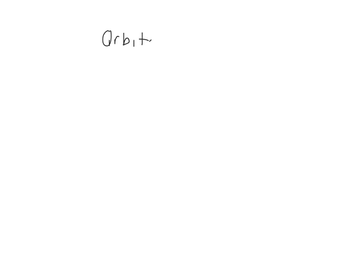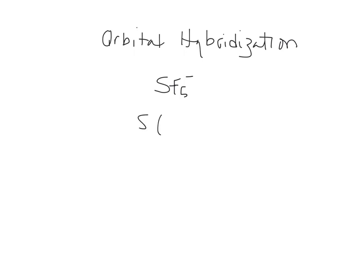This video is going to be on orbital hybridization. I'm going to do two examples. The first one is SF5⁻. SF5⁻ has sulfur as its central atom, and the electron configuration for sulfur in the valence shell is 3s²3p⁴.